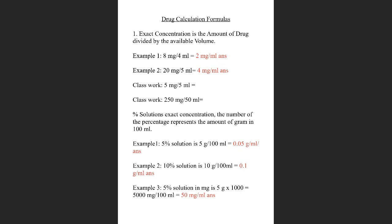Example one: you have a 5% solution and we need to find the exact concentration in grams per mil. It is 5 grams in 100 mils, so that's 5 divided by 100. Because we're dividing, the decimal point moves two places to the left — giving us 0.05 grams per mil.